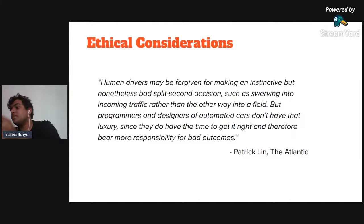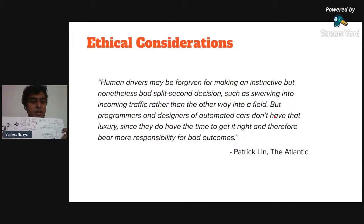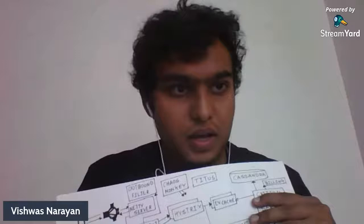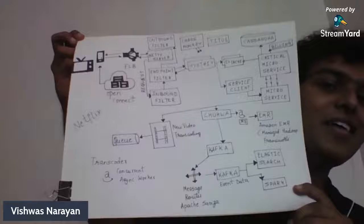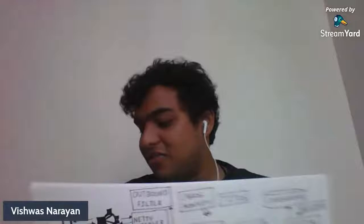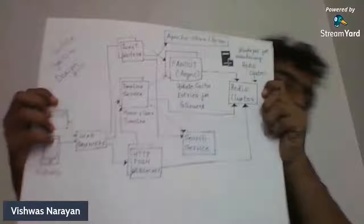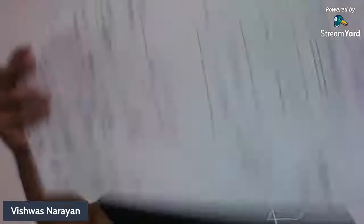Let me show you some system architecture examples for scale. Here's the Netflix architecture — this complex system makes real-time decisions just to stream your videos. There's also the Twitter architecture — tweeting looks simple but involves ETL pipelines and many other complex components. And here's the WhatsApp architecture — it's massive. These illustrations show how complex production-level systems really are.